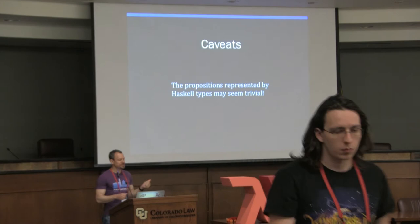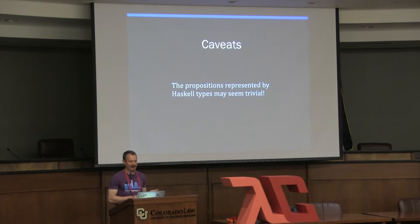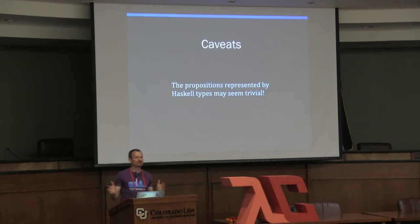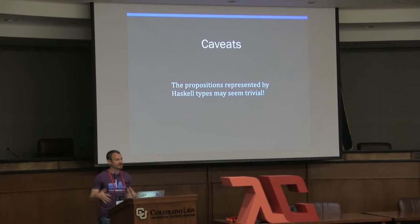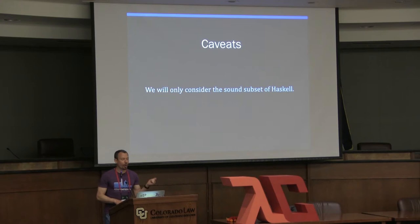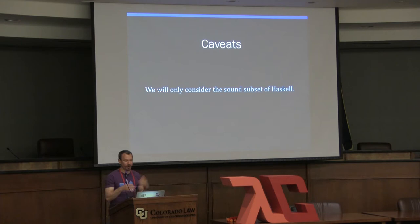First caveat: the propositions represented by Haskell types may strike you as trivial, and this is true. The Haskell type system, as type systems go, is fairly simple and basic. Don't let the simplicity of the propositions bother you — we can represent richer propositions by going to a richer type system like dependent types. Second caveat: we're only going to be considering the sound subset of Haskell, excluding things like the bottom type, non-termination, and general recursion.